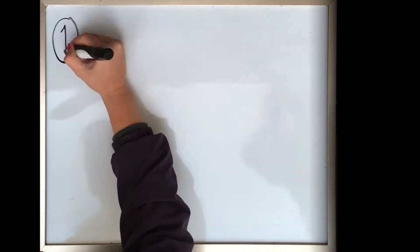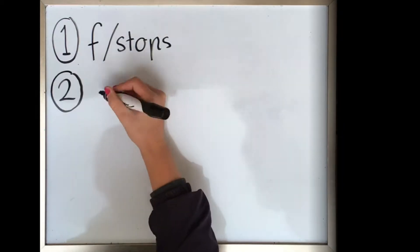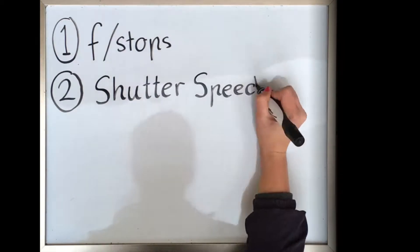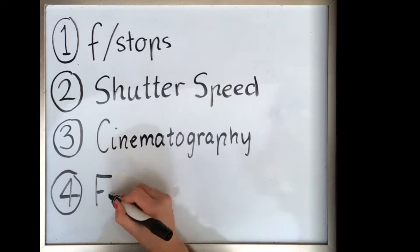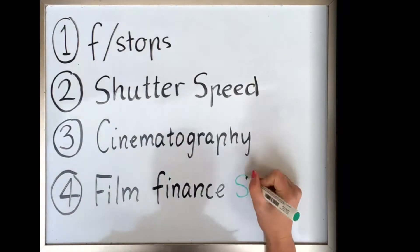Filmmakers use a wide variety of math techniques including f-stop, shutter speed, cinematography and film finance. Behind the camera, filmmakers use these techniques to make shots look more appealing. Without maths, filmmakers wouldn't be able to produce the films we all know and love.